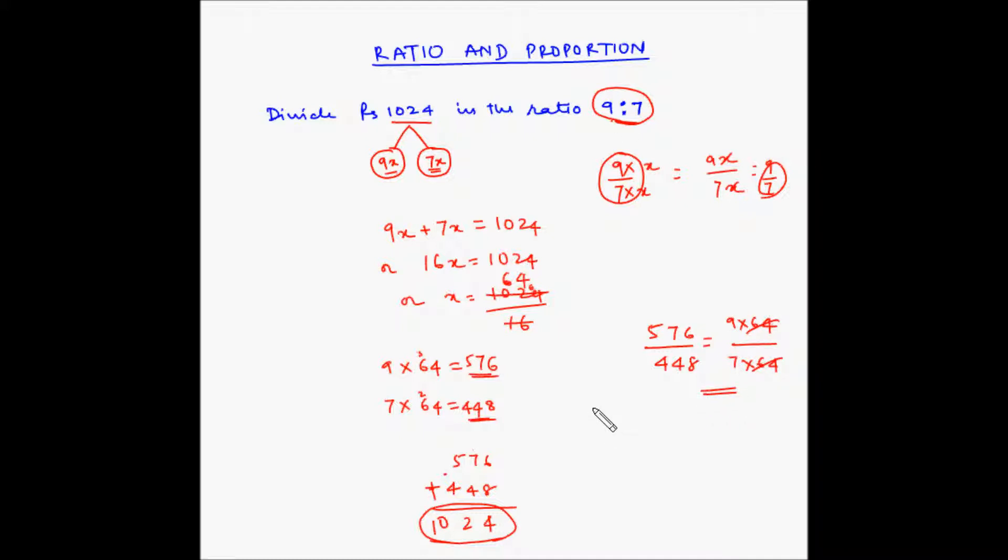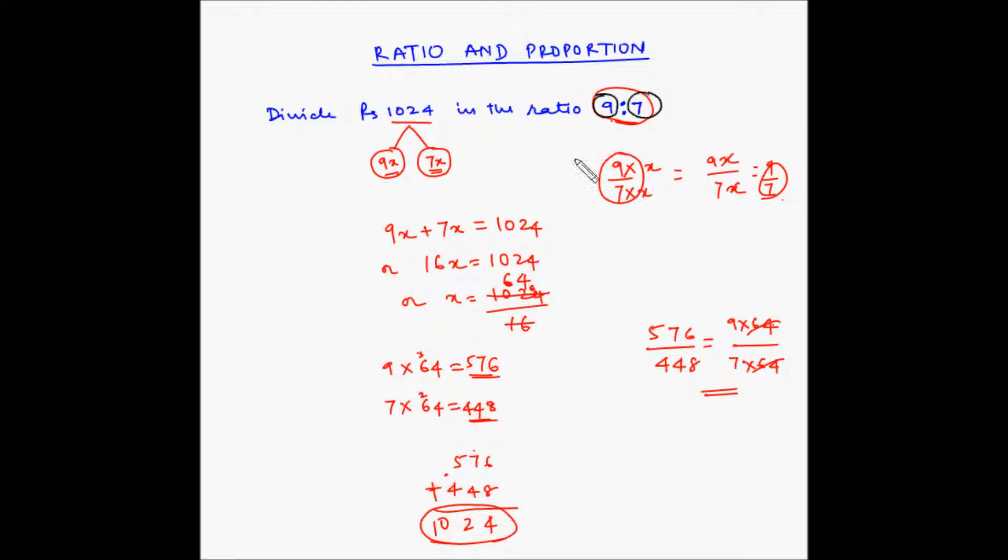Let us look at another way of solving this. We have to split rupees 1024 in the ratio of 9 is to 7. What this means is that if we split 1024 rupees into 16 equal parts. Why 16? Because the total is 9 plus 7 is 16. If we split rupees 1024 into 16 parts, then 9 parts out of those 16 parts is this portion of the ratio, and the 7 parts out of the 16 parts is this portion of the ratio.